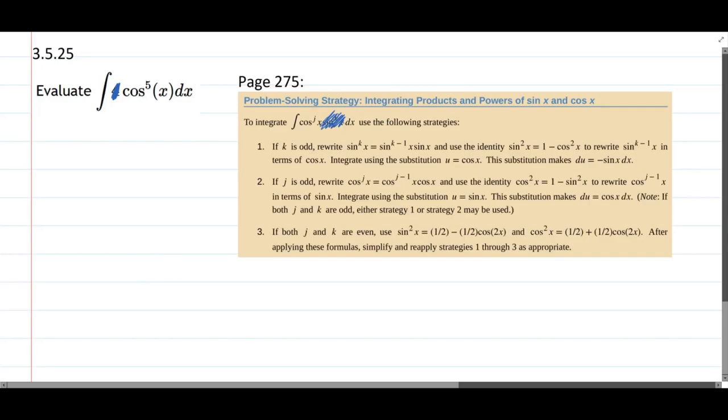We do have cosine, however, and our i, or in this case our j, is equal to five. So we're on step two, j is odd, which is five.